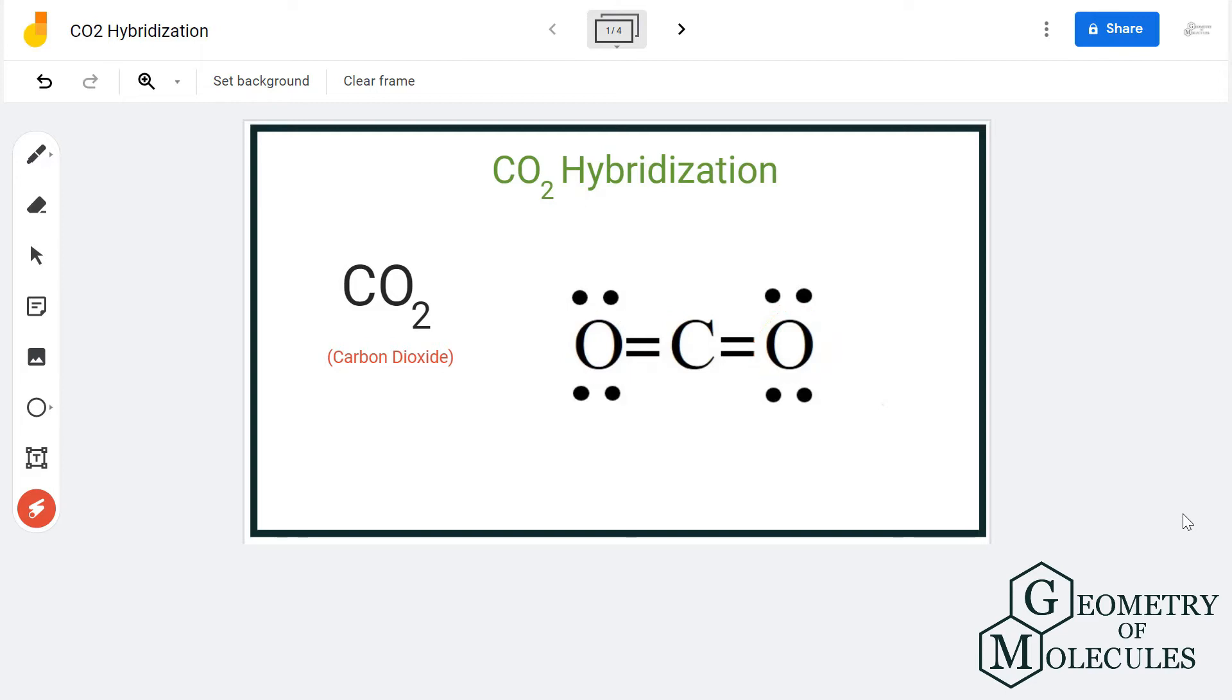To understand its hybridization, we will first go through its Lewis structure and then proceed with finding steric number to know the hybridization. So here is the Lewis structure of CO2 molecule in which one atom of carbon is forming a double bond with both these oxygen atoms.